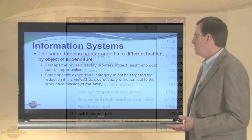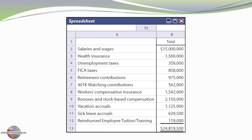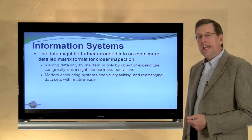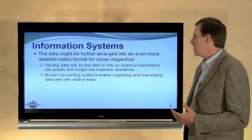Let's rearrange this data in a different fashion, this time looking at object of expenditure. It's the same $24,819,500. But now, rather than line item, we're showing object of expenditures: salaries and wages, health insurance, unemployment taxes, retirement contributions, and so on. Now we might look at a row and say that if we need to cut, maybe we should cut bonuses and stock-based compensation plans, rather than reducing the specific workforce, which could result in reduced output and further exacerbate our problems.